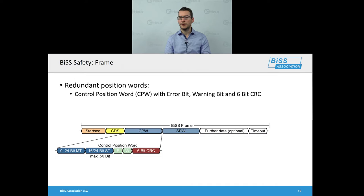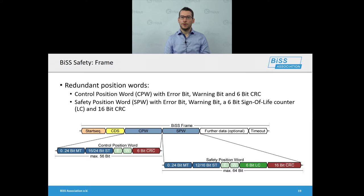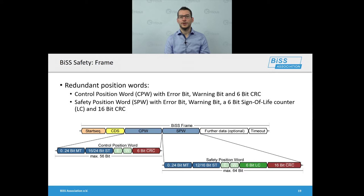The control position word consists of multi-turn and single-turn information for a rotary encoder, or linear information for a linear encoder. It includes an error bit and a warning bit, and the whole data content is protected by a 6-bit CRC. The safety position word also contains redundant position information — multi-turn and single-turn or linear — but usually at lower resolution since it is only used for safety checks. It includes the error bit, warning bit, and a 6-bit sign-of-life counter used to detect missing frames. The whole data content is protected by a particularly robust 16-bit CRC.